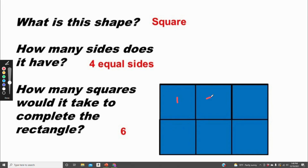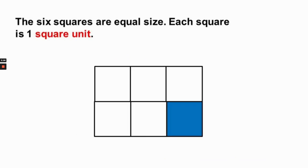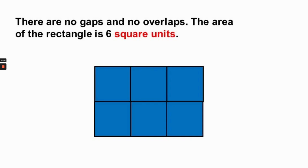One, two, three, four, five, six. The six squares are all equal in size. Each square is one square unit. There are no gaps and no overlap. The area of the rectangle is six square units.